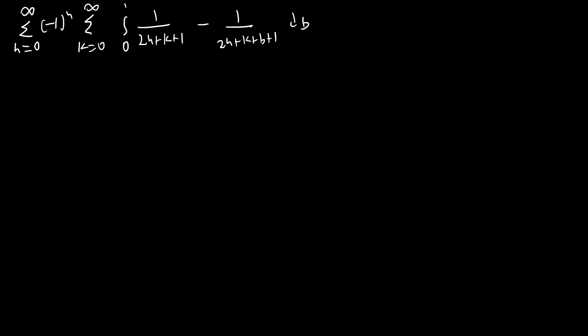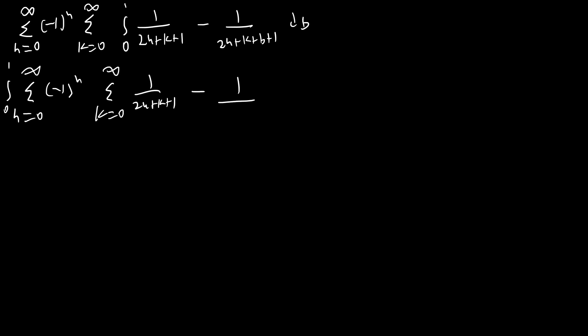Now we have this nice form for our summations and integral. I'm not a pure math kind of guy, so I'm going to go ahead and exchange the order of integration and summation here, which may not be entirely rigorously justified. So we get the sum from n equals 0 to infinity of negative 1 to the n, bringing the integral over b all the way outside. We end up with the sum from k equals 0 to infinity of 1 over 2n plus k plus 1 minus 1 over 2n plus k plus b plus 1, all times db.